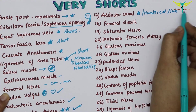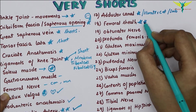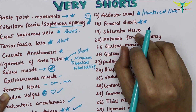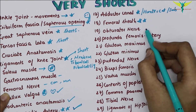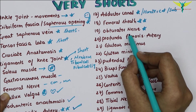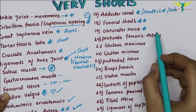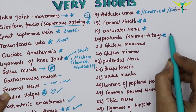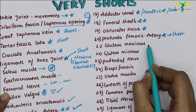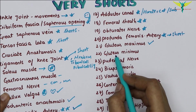The adductor canal is very important — they may ask it as Hunter's canal or subsartorial canal to confuse you. The femoral sheath is very very important — they will ask the contents and how the sheath is formed. The obturator nerve is important — write about its extent and the muscles it supplies. The profunda femoris artery is very important and can also be asked as a short.